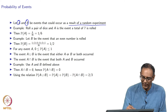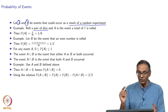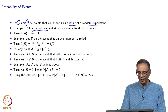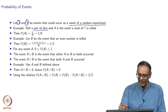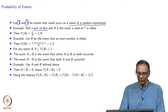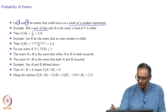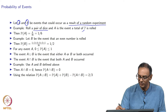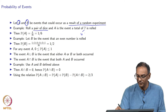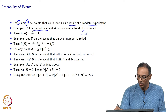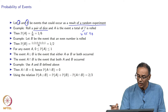Let us say you roll a pair of dice. That means there are two dice that you roll and A is the event that you roll the number 7. What are different ways of rolling a 7? Well, you could roll a 7 by rolling either a 1 and a 6, or a 2 and a 5, or a 3 and a 4.